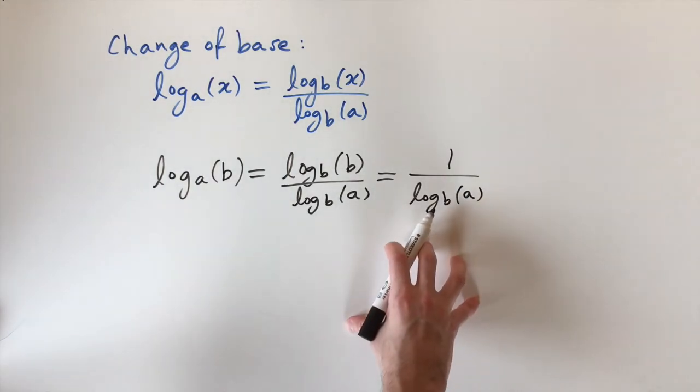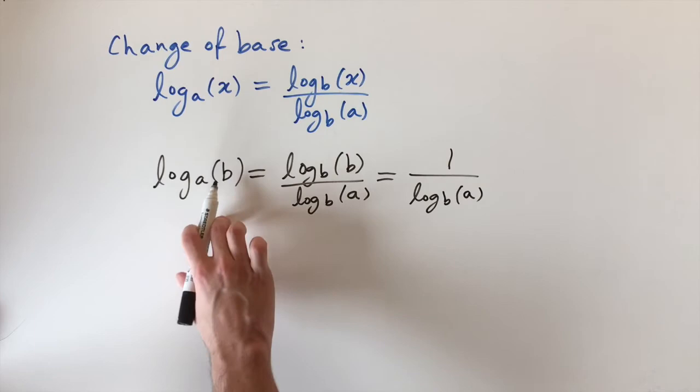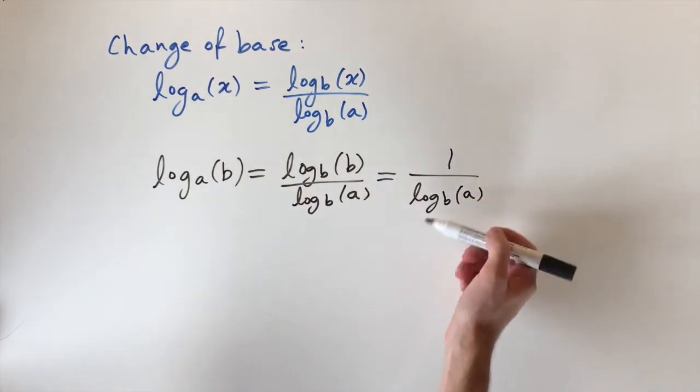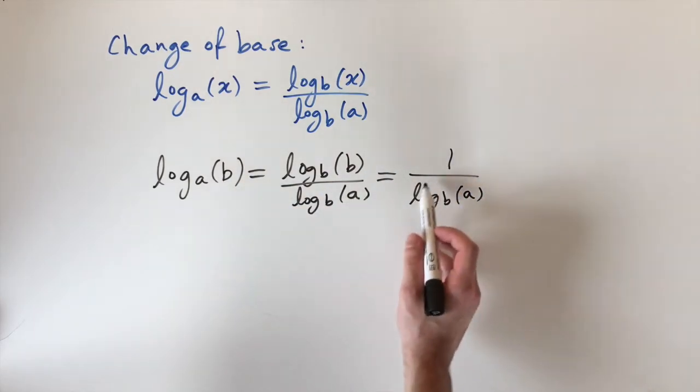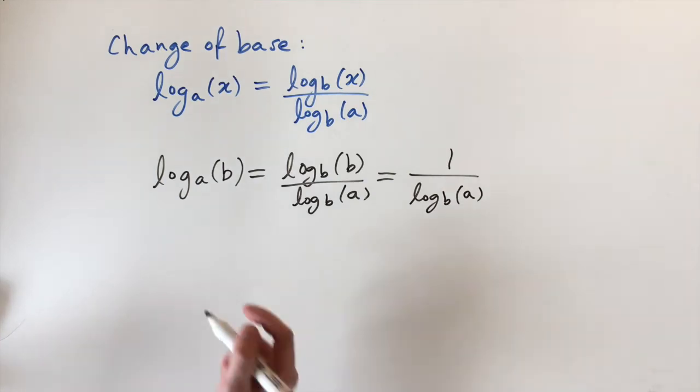So this actually simplifies to 1 over log to the base b of a. So this is a really nice way to switch the base and the number that we're taking log of. We just have to flip it. It's 1 over the logarithm of the new base.